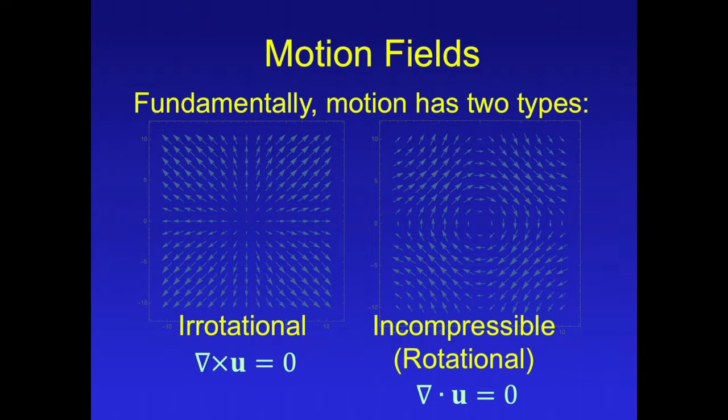Fundamentally, motion has two types: irrotational motion, in which case the curl of the velocity is zero, and incompressible motion, also called rotational motion, in which case the divergence of the velocity is zero.